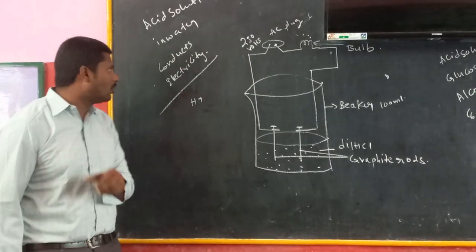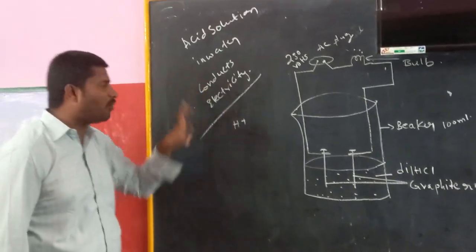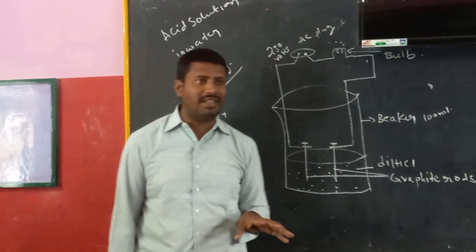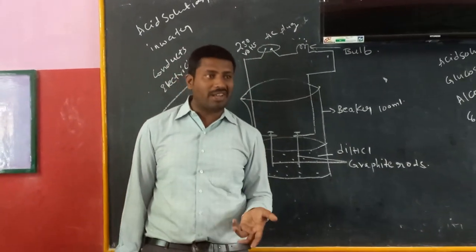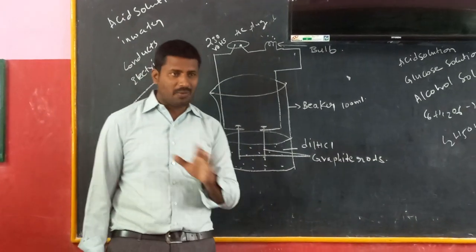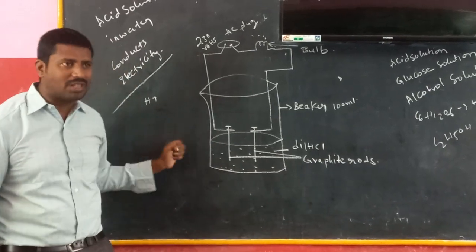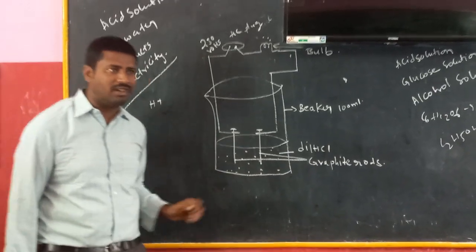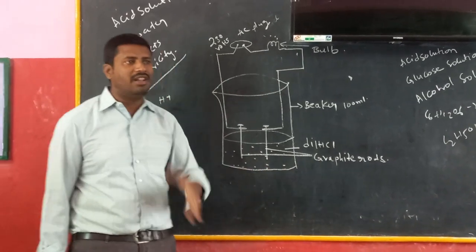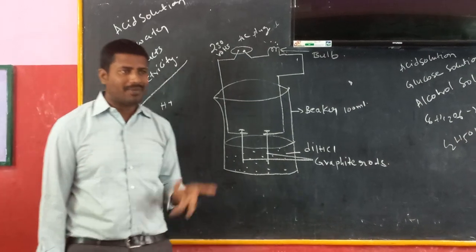Hence, we conclude that the acidic solution in water conducts electricity. In one more experiment, we replace the hydrochloric acid solution with glucose solution. When we add glucose solution, H+ ions are absent.